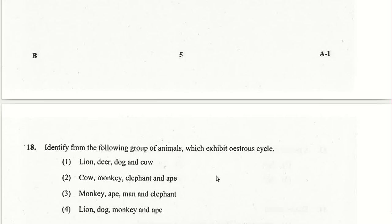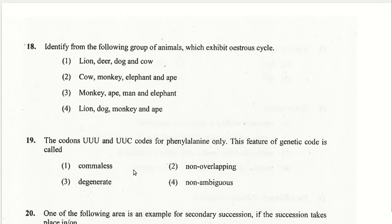Animals that exhibit the estrus cycle include lion, deer, dog, and cow. The codons UUU and UUC both code for phenylalanine only — this feature of the genetic code is called the non-ambiguous nature.